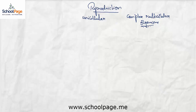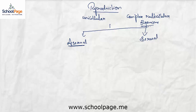All modes of reproduction can be broadly classified into two main categories depending on the parents involved. The first is asexual mode of reproduction, in which there is only a single parent involved. A single parent gives birth to an organism same as itself, and the resulting offspring is genetically similar to its parent.